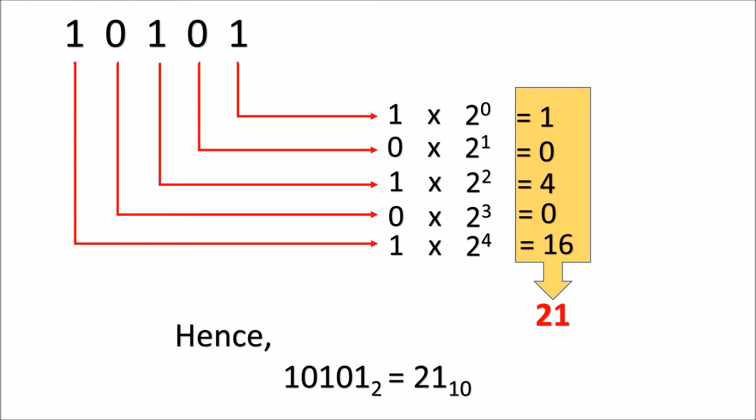The fourth value, 0 x 2 cube. That is 0. The fifth value, 1 x 2 to the fourth power. That is 16. Now sum up all the values, we get 21. So the answer is 21.